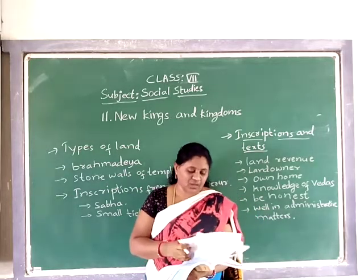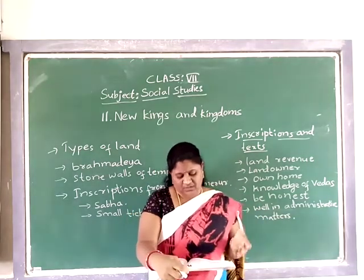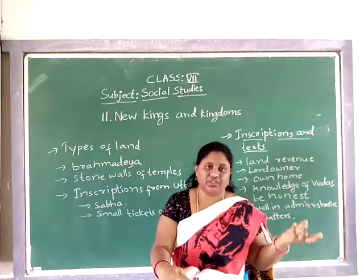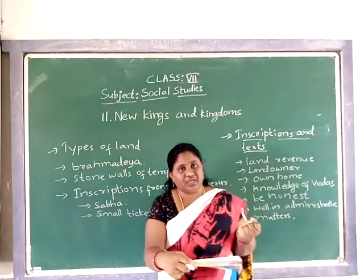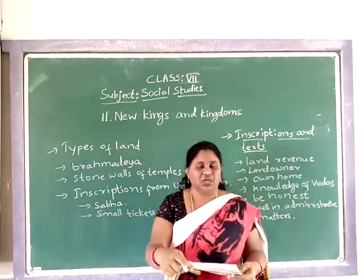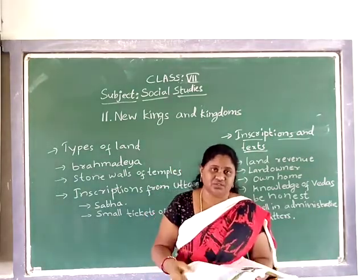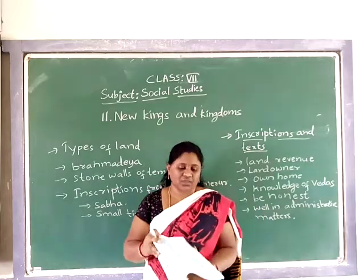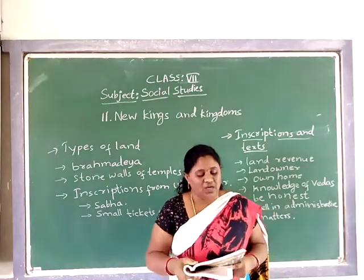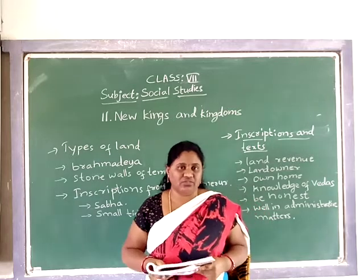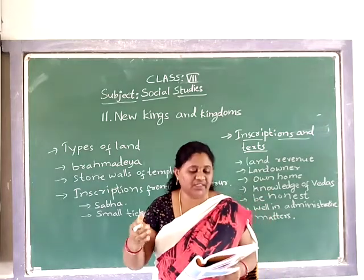We read about the Chola sculptures, temples, and how much importance they gave to temples and agriculture. We covered how they developed agriculture, the irrigation methods they used, how they formed their administrations, and the types of land - the Chola inscriptions mention several categories of land.